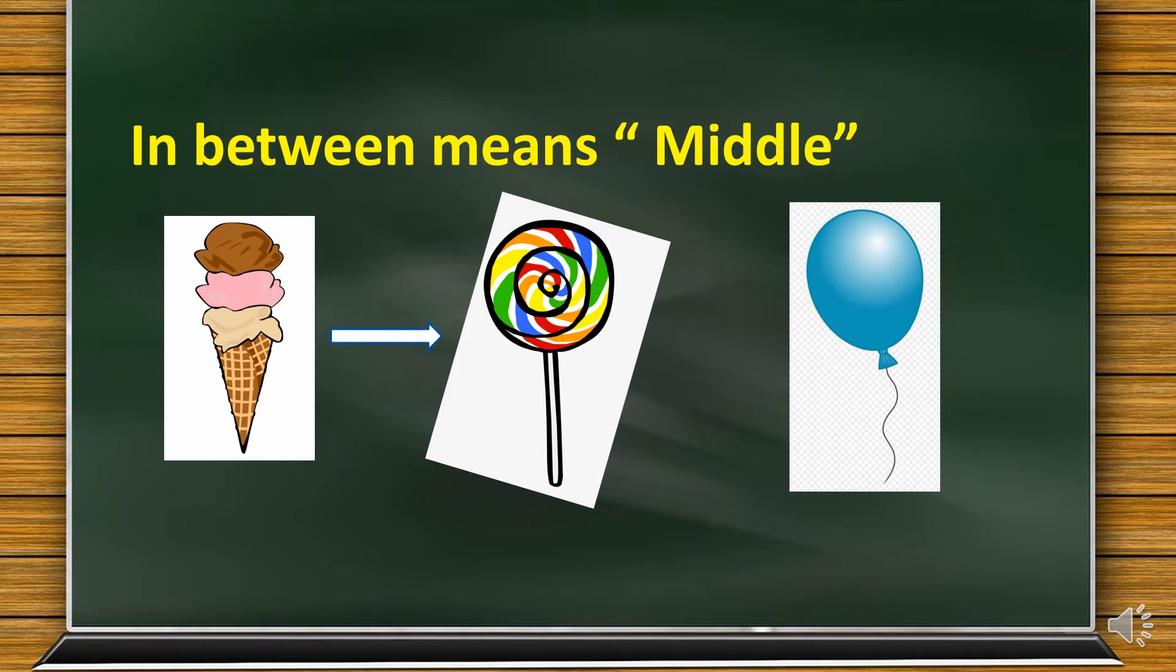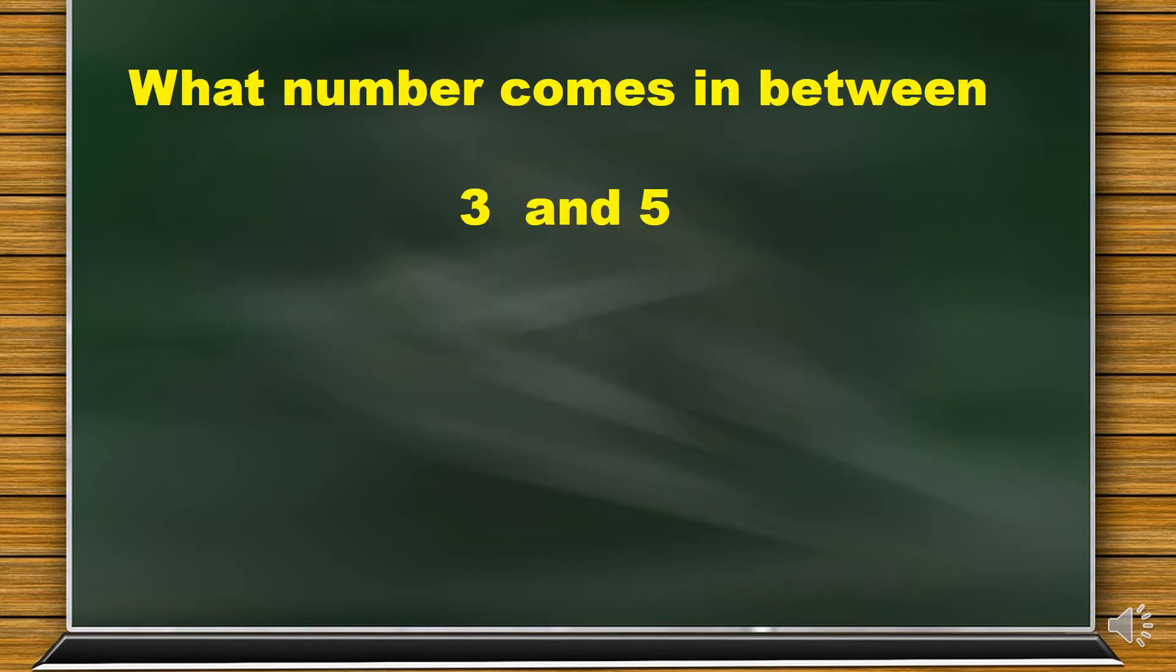So from here you can see, from the ice cream the next is lollipop, and over here in front of the balloon is the lollipop.